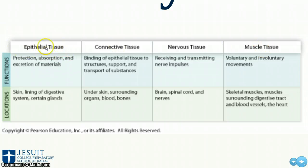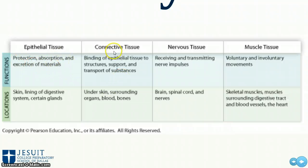Each tissue type has different functions. Epithelial tissue is anything in contact with the outside world or things that came from the outside world directly — so this includes your skin, the lining of your digestive tract, and certain glands. They aid in protection, absorption, and excretion of materials. Connective tissue includes things like ligaments, bones, skin components, and the material surrounding organs — it binds epithelial tissue to structures and provides support.